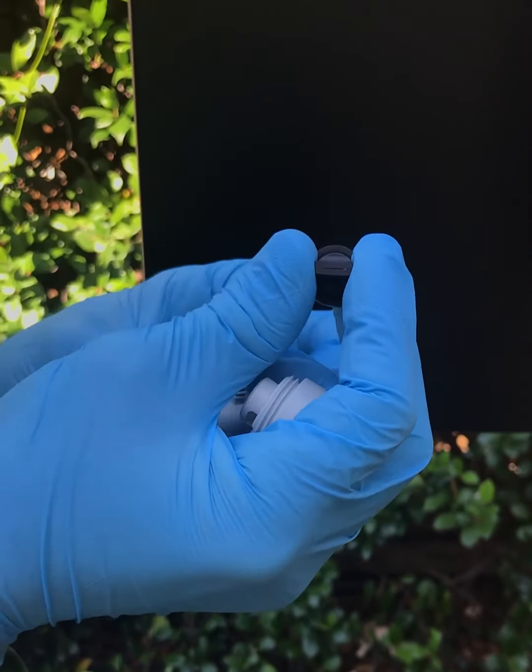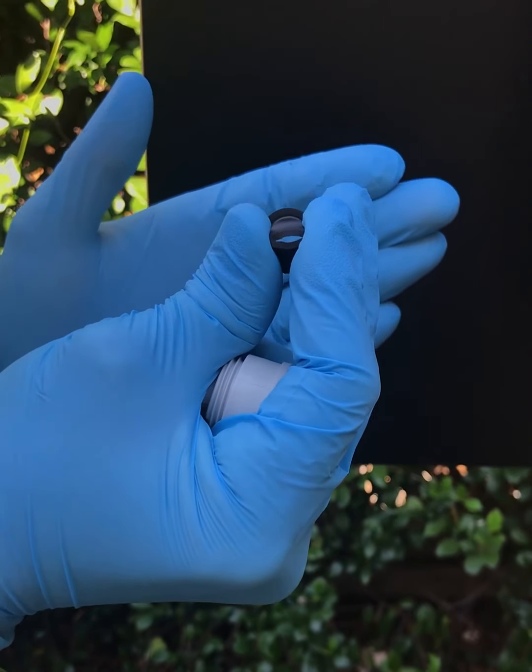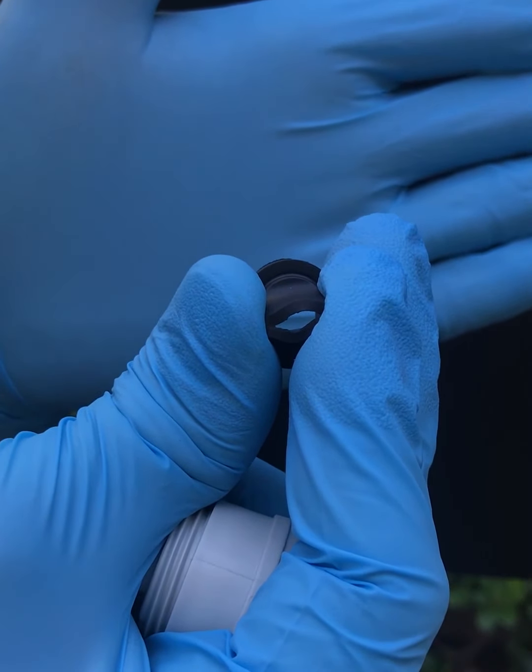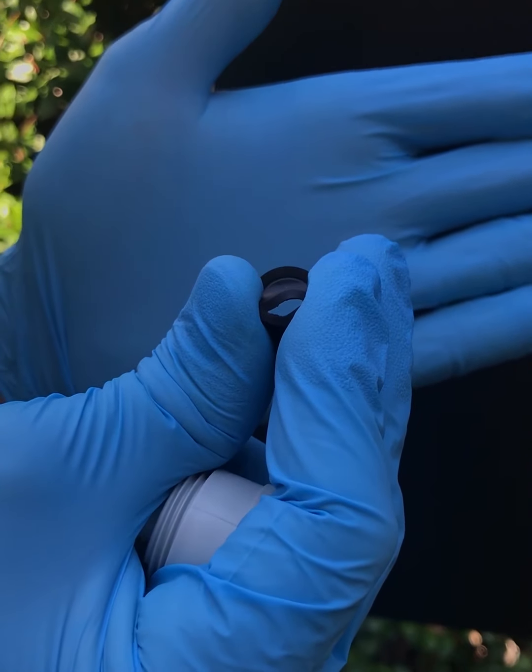To inspect, slightly pinch on either side of the duck bill seal to expose the slit and check it for any foreign debris or particles, rinsing with fresh water if needed.